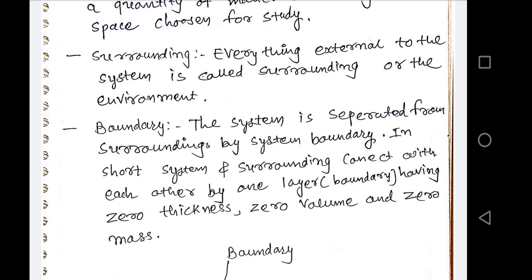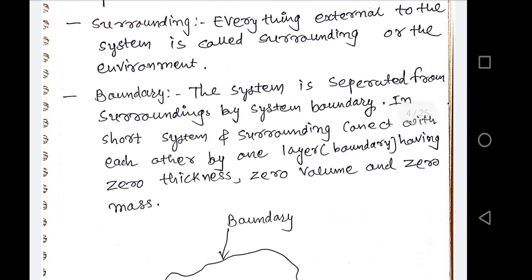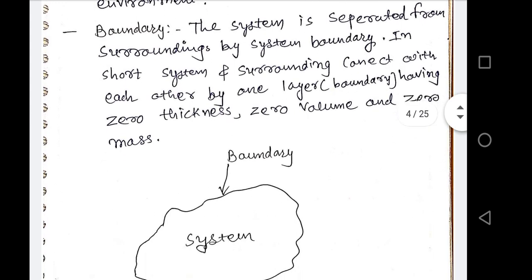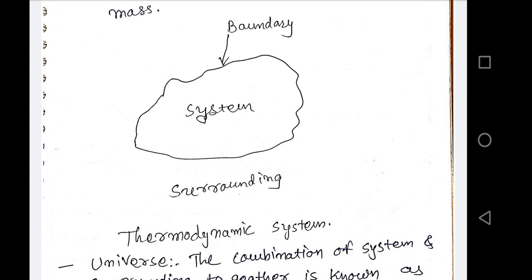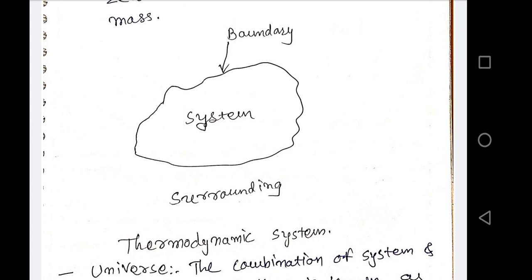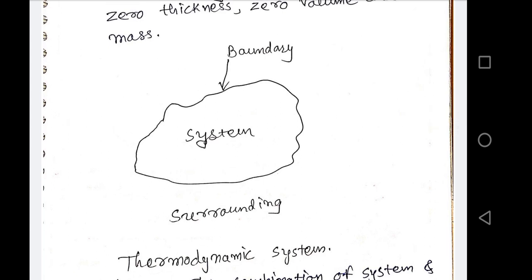The boundary is an imaginary line which separates the system from the surrounding, having zero thickness, zero volume, and zero mass. It is known as a thermodynamic boundary. If we draw a diagram on paper, the inside is the system, the outside is the surrounding, and the outline separating them is the boundary.